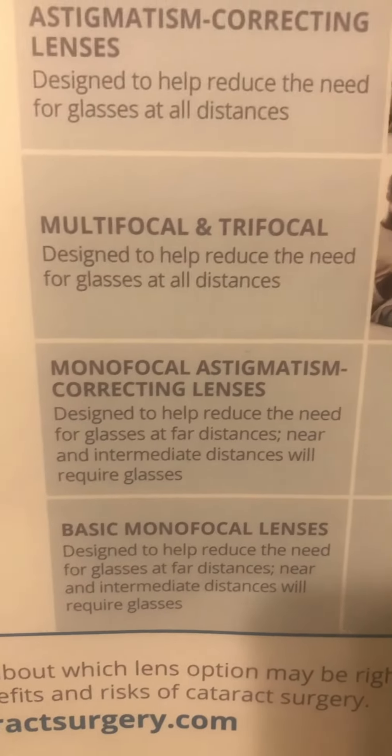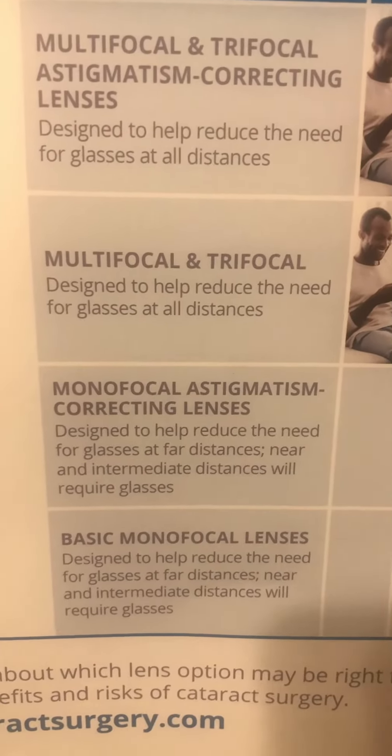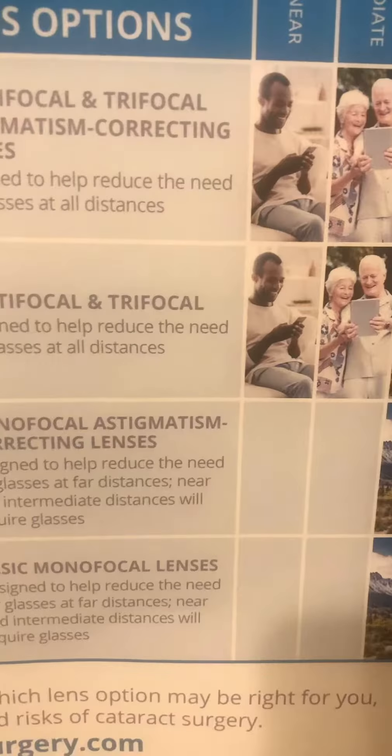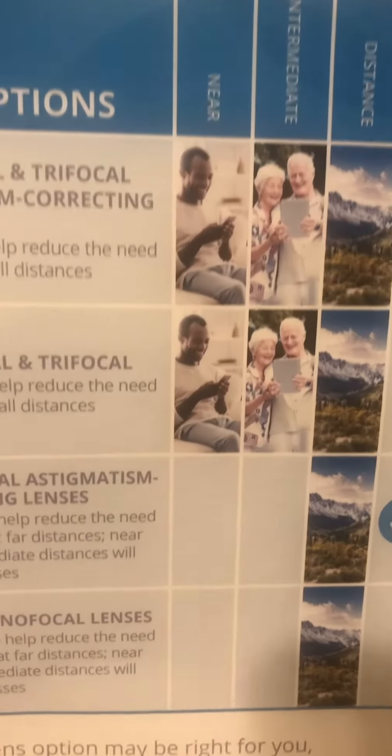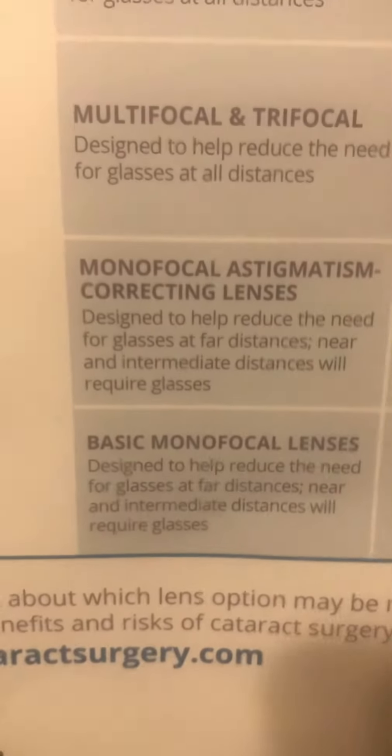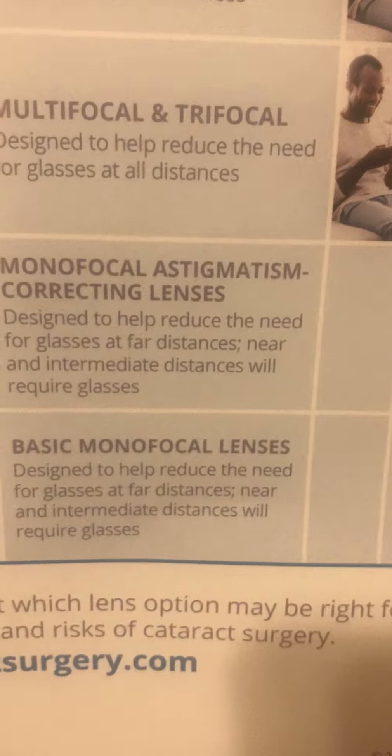With the multifocal or trifocal option, you can get all three ranges of vision, but of course it's not going to correct for astigmatism. The third type is a monofocal astigmatism-correcting lens, which is going to help with distance and astigmatism, but patients will need glasses for intermediate and reading. A lot of patients do go for that type of lens.